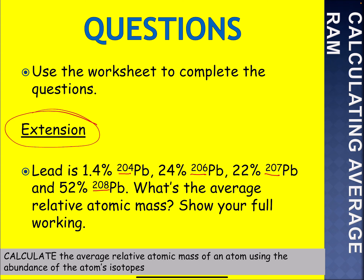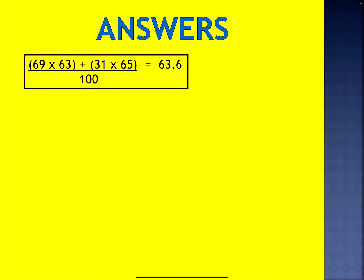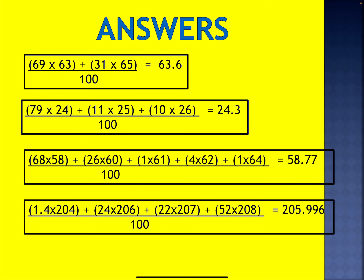Okay, so the answer you should have got is: 1.4% of 204, plus 24% of 206, plus 22% of 207, plus 52% of 208 — all divided by 100 because it's percentages. And there's your answer.